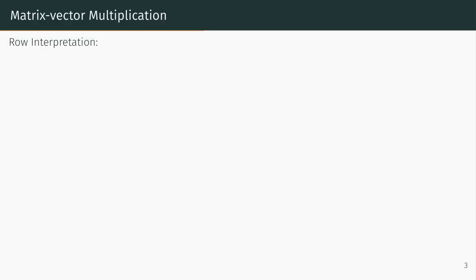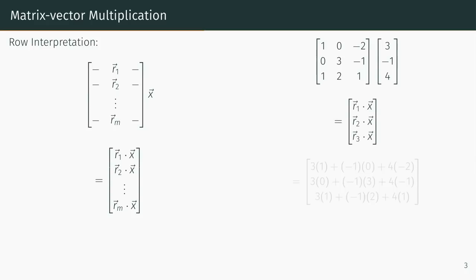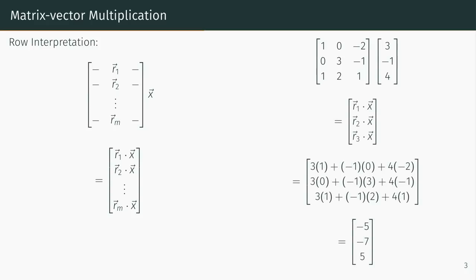This gives us a row interpretation of matrix-vector multiplication. Consider a matrix whose rows are R1 through Rm times the vector x. The result of this matrix-vector product is the vector whose entries are R1 dot product with x, R2 dot product with x, and so on all the way down to Rm dot product with x. Our earlier example can be rethought of in this light, and of course we obtain the exact same answer.